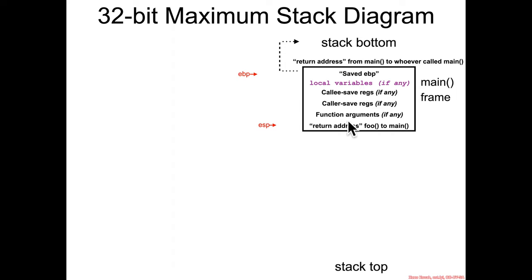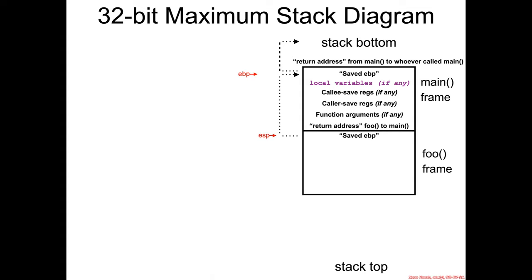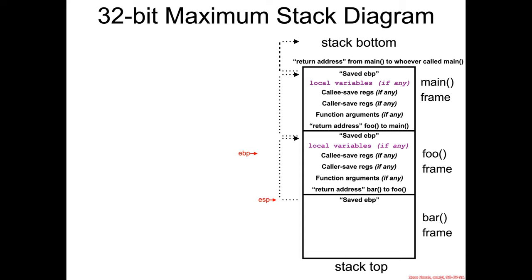This is the maximum stack contents, but note that it says 'if any' for all of these items. There could be no local variables, no callee-save registers, no caller-save registers, or no function arguments. For a leaf node, you would have only saved EBP and no further usage of the stack frame. As function calls continue, saved EBPs go first and so forth. At the leaf function, you would expect only the potentially callee-save registers, local variables, and the saved EBP — no caller-save registers, no function arguments, and no return address since it doesn't call anything.